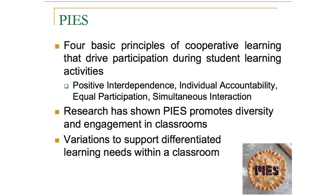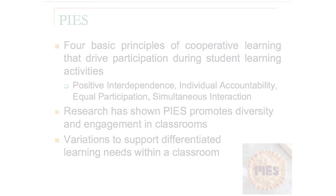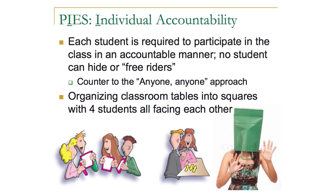Positive interdependence is when the classroom activity is totally organized so that students work together as a team towards a common goal — it's not the case where each student feels they're competing with others for praise, which is often the case in traditional classrooms. Individual accountability means each student is forced in some way to participate in the classroom activity, so no student can lay back and hide or take a free ride off of others' discussion, which can often happen even in group work.